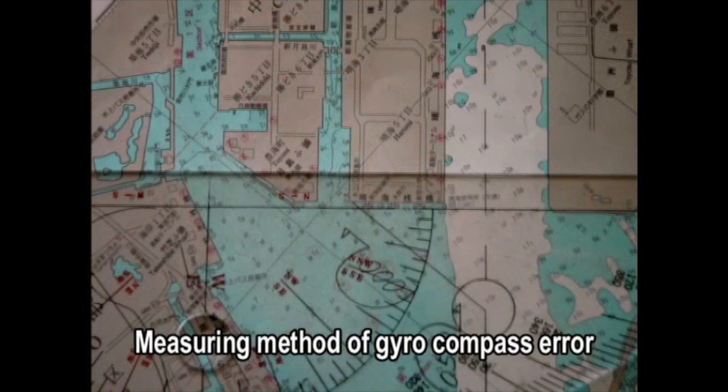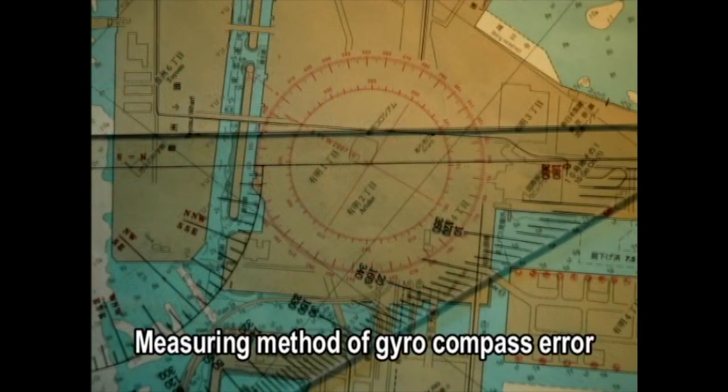One method of gyro compass error measurement is the amplitude method. The other is measurement using the azimuth of the ship's berth.